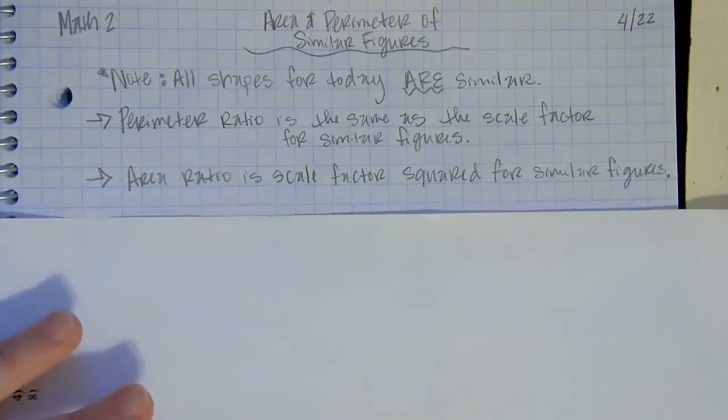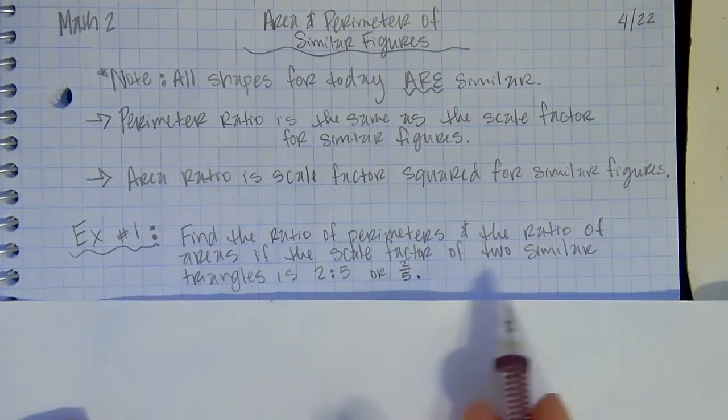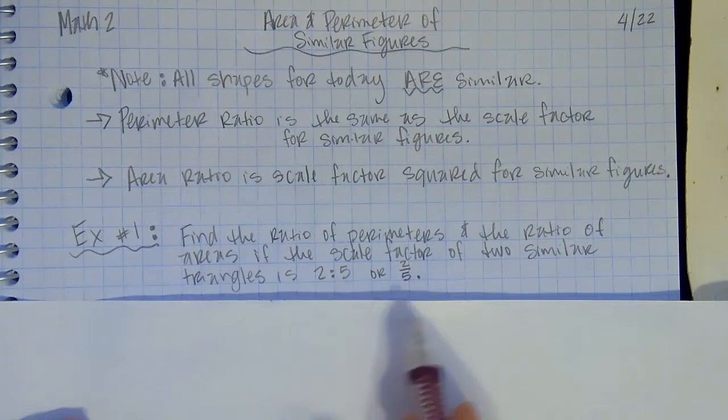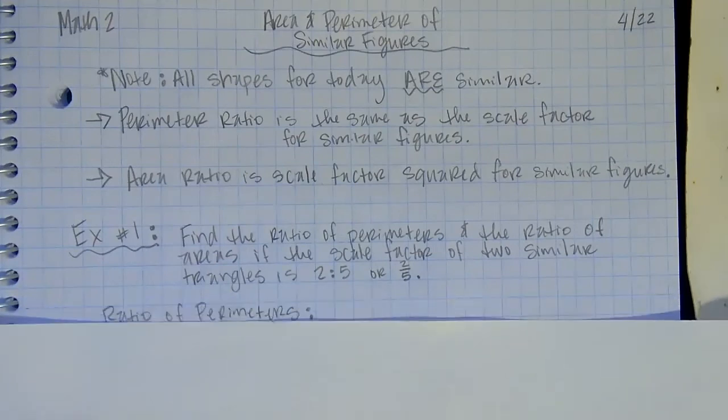Let's look at our first example. It says find the ratio of perimeters and the ratio of areas if the scale factor of the similar triangles is two to five or two over five. Those mean the same thing.